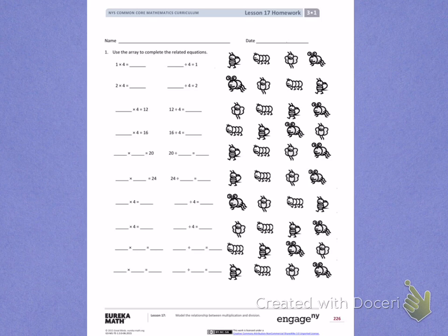Number 1: Use the array to complete the related equations. I first see I have 1 times 4, which tells me I have 1 row of 4. 1 row of 4 gives me a total of 4 bugs.